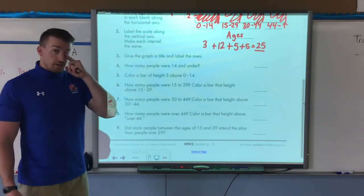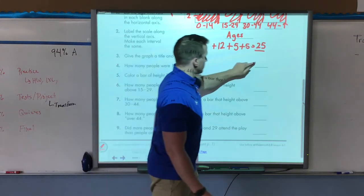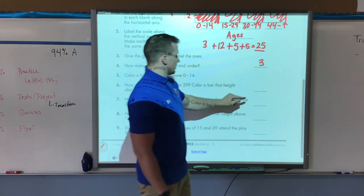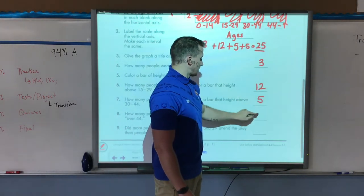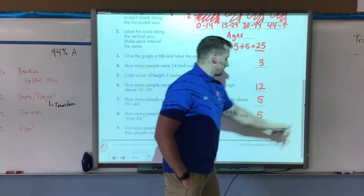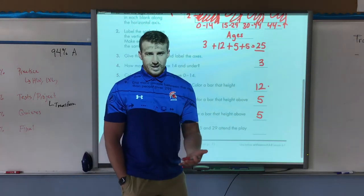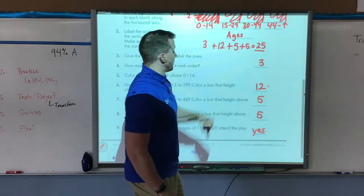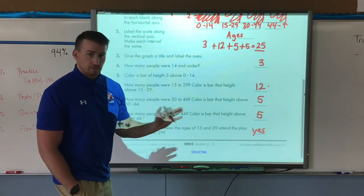Now we're going to answer these questions about the histogram that we just created. How many people were 14 and under? There were three of them. How many people were between 15 to 29? 12. How many people were 30 to 44? Five. Did more people between the ages of 15 to 29 attend the play than people over 29? Is 12 greater than 10? Our answer is yes. More people attended that were between the ages of 15 and 29 than the rest.